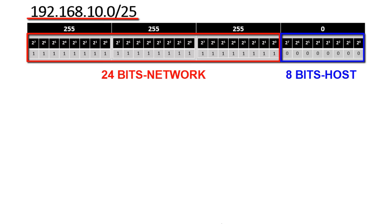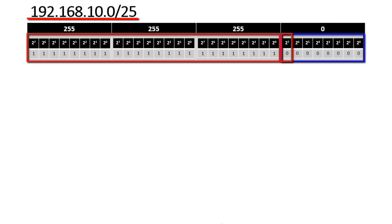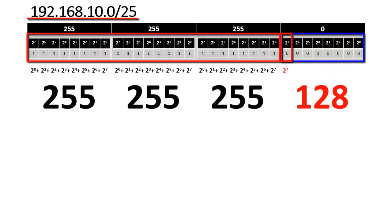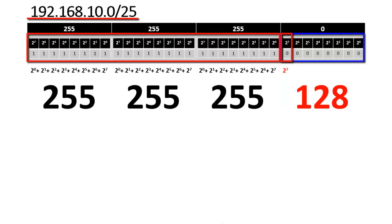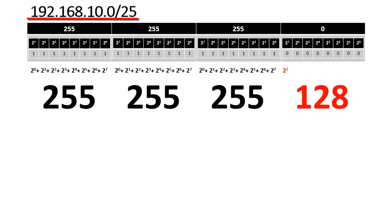The solution is simple — we have to borrow 1 bit from the host. The new subnet mask you will get is 255.255.255.128. This number came from the network bit borrowed from the host; its value is 2^7, and 2^7 equals 128. So the new subnet mask is 255.255.255.128.